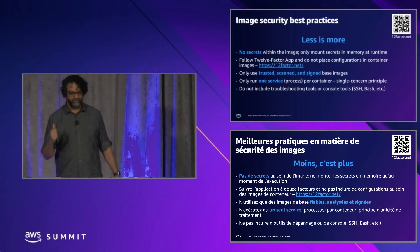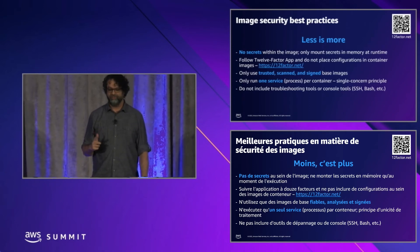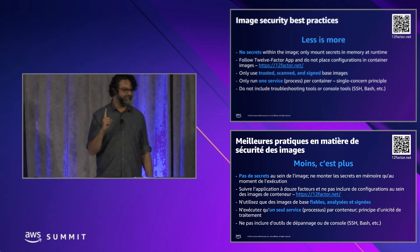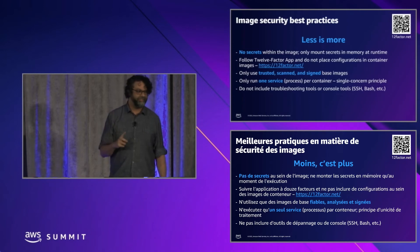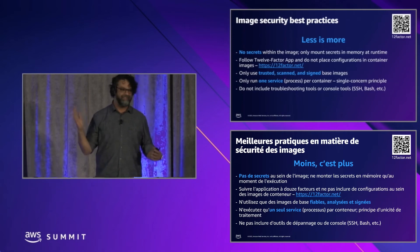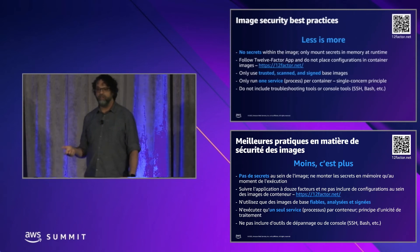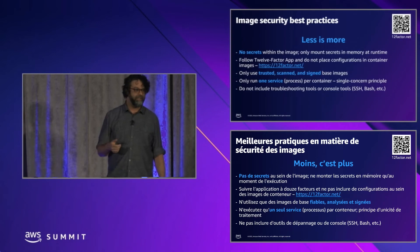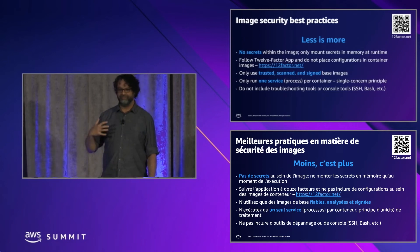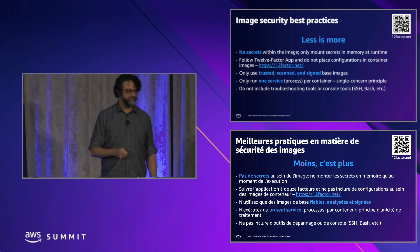To recap — reduce, reuse, and recycle. Reduce: no secrets in your image, one service per container, no SSH tools, avoid debugging tools and anything your application doesn't really need. Reuse: follow 12-factor app patterns for your application development — they're vetted, widely adopted patterns. Recycle: use trusted images that have been vetted by your organization, signed base images.